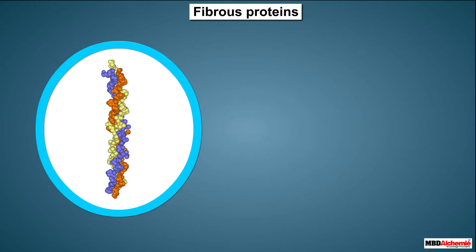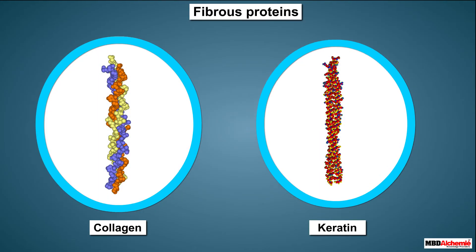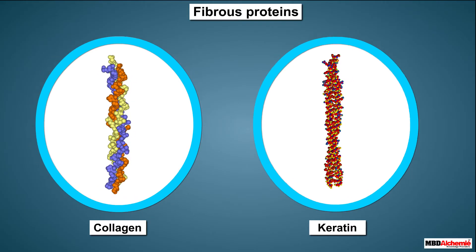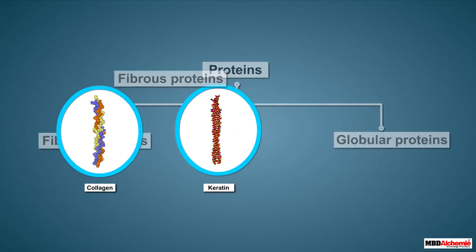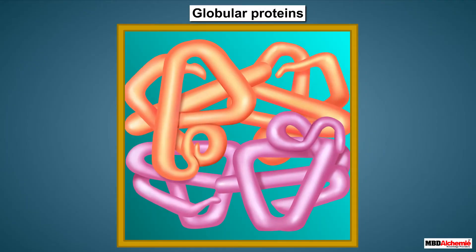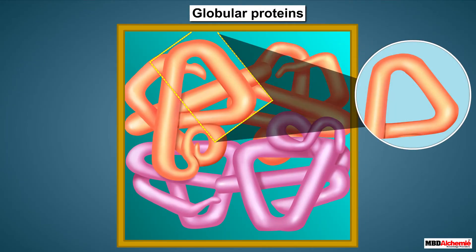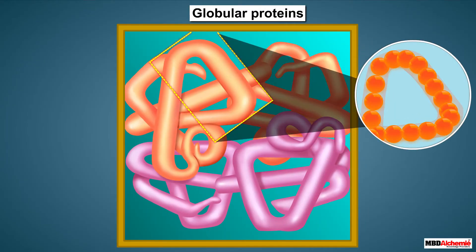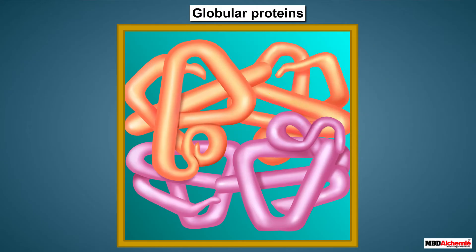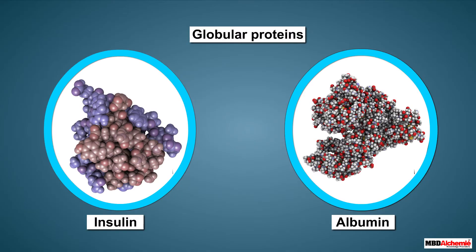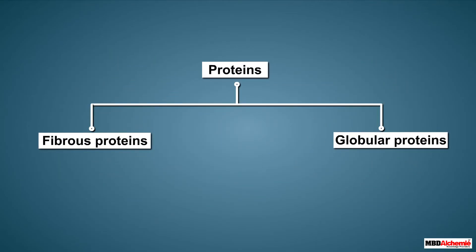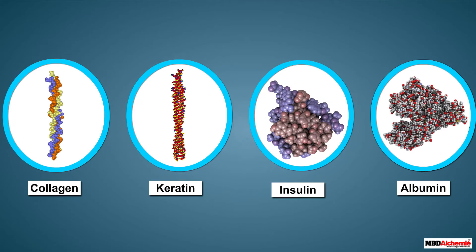Fibrous proteins are insoluble in water. Some common examples of fibrous proteins are collagen and keratin. On the other hand, globular proteins are formed due to the folding around of polypeptide chains, giving a spherical shape. These proteins are soluble in water. Some examples of globular proteins are insulin and albumin.